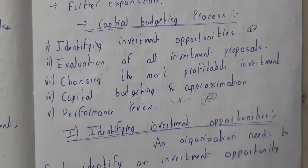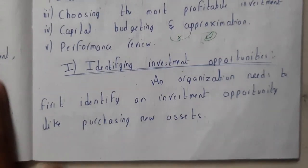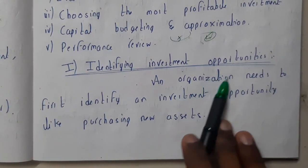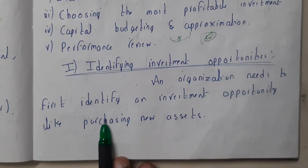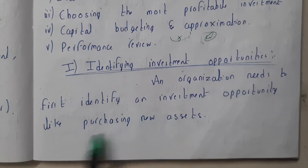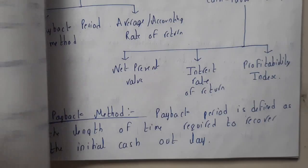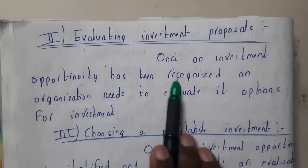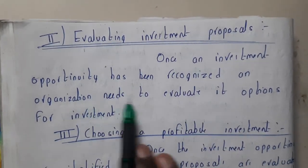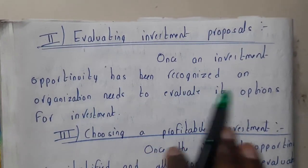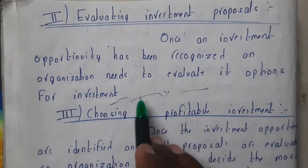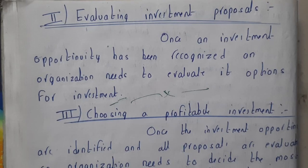After the approximation, you'll give your performance review. Those are the five steps you'll be following. Now the theoretical explanation: first, identifying investment opportunities — an organization needs to first identify an investment opportunity, like purchasing new assets. Once identified, it will evaluate — once an investment opportunity has been recognized, an organization needs to evaluate its options, whether to buy it now or wait six months and then buy it.